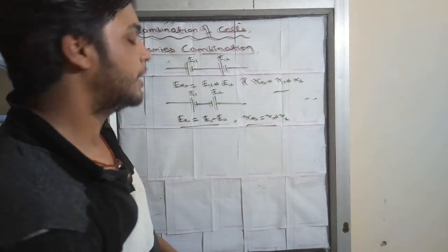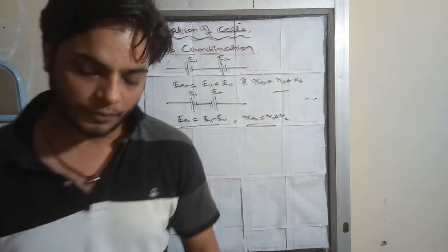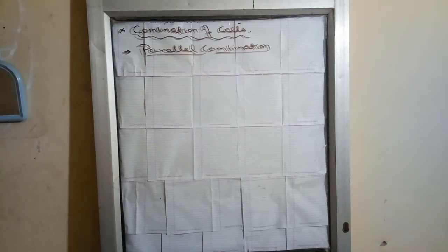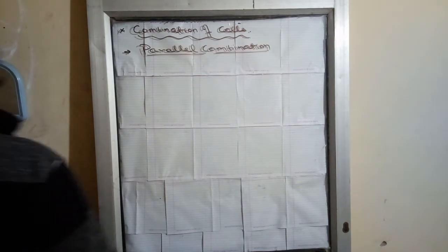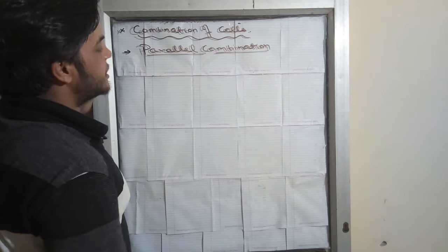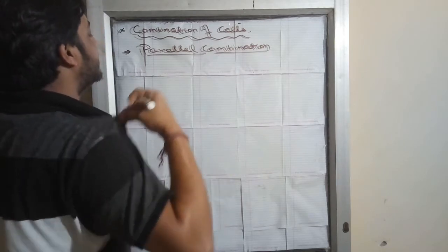So we have seen the series combination with same terminals connected. Now we will see parallel combinations.